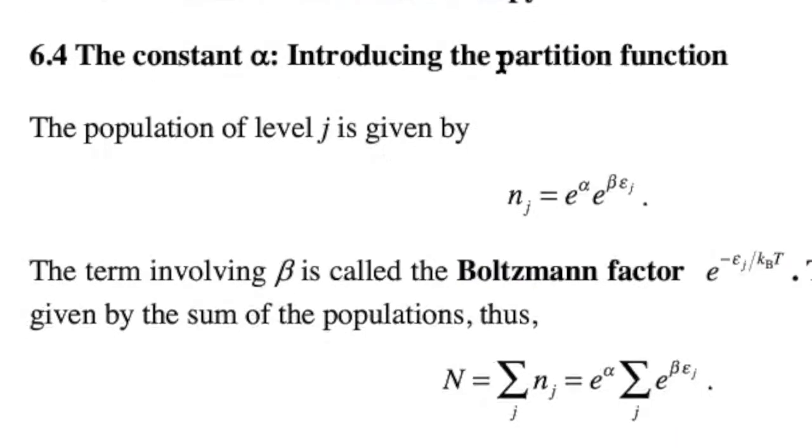Let's introduce the concept of the partition function. We had this Boltzmann distribution here, e to the alpha times e to the beta epsilon of j, the energy of that state, and that Boltzmann factor. That was just energy and temperature related. This is an exponentially decreasing term as the energy increases, inversely related to the temperature.